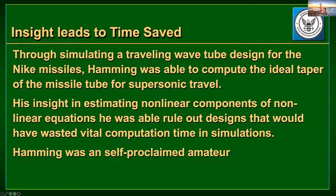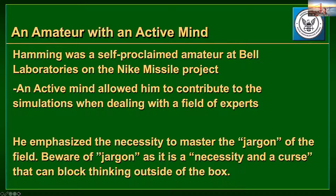He self-proclaims in both the paper and the video that he was an amateur when it came to missile design. He was a mathematician at heart, not a ballistics or aeronautical engineer. Yet he was able to derive ideal silo, taper, and wing size for these missile systems. But he didn't do that alone — he was an amateur with an active mind. He brought together people around him and learned the jargon of the experts.